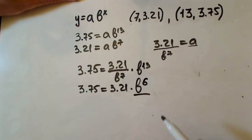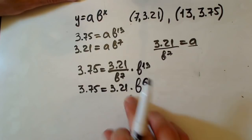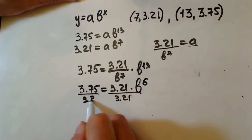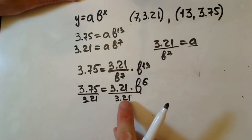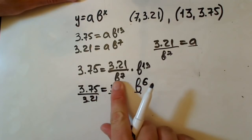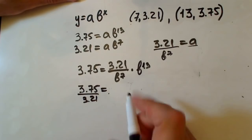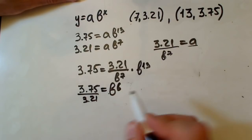To find b we have to divide both sides by 3.21 to leave it alone on one side. This cancels and we are left with b to the sixth. b to the sixth equals 3.75 over 3.21.